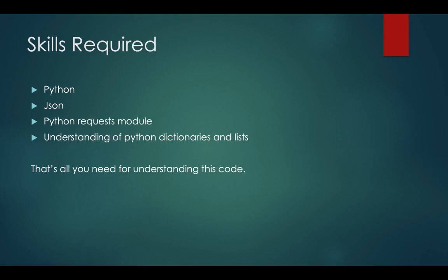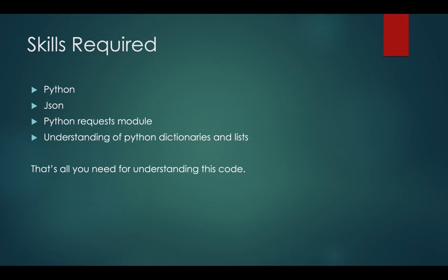The skills required to understand the code are minimal. You need basic Python, and you need to know how to get a particular element from a JSON file. Since we are sending requests to the CricBuzz API endpoint, you need the requests module — that's only one line of code. You also need a good understanding of Python dictionaries and lists, since most of the code uses dictionaries and I return all responses in JSON format.